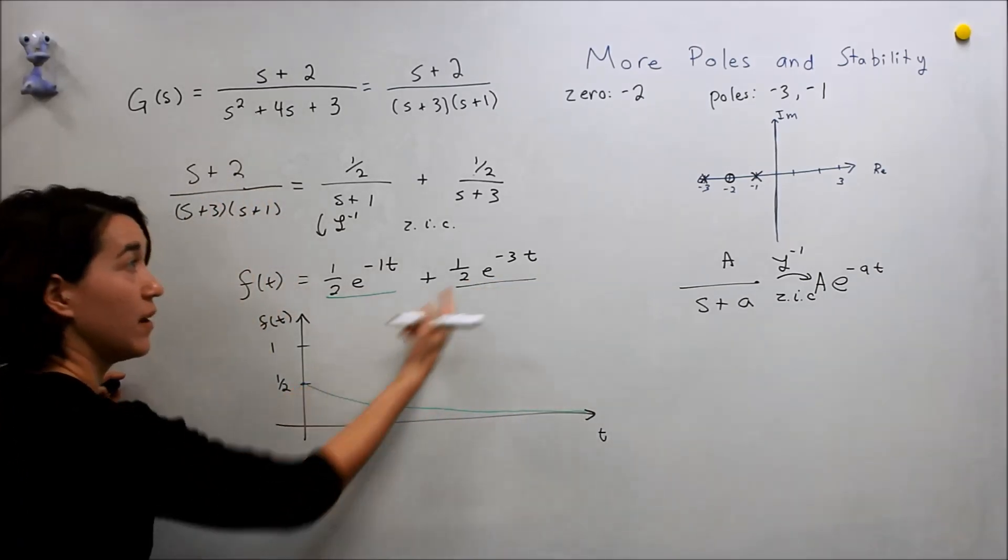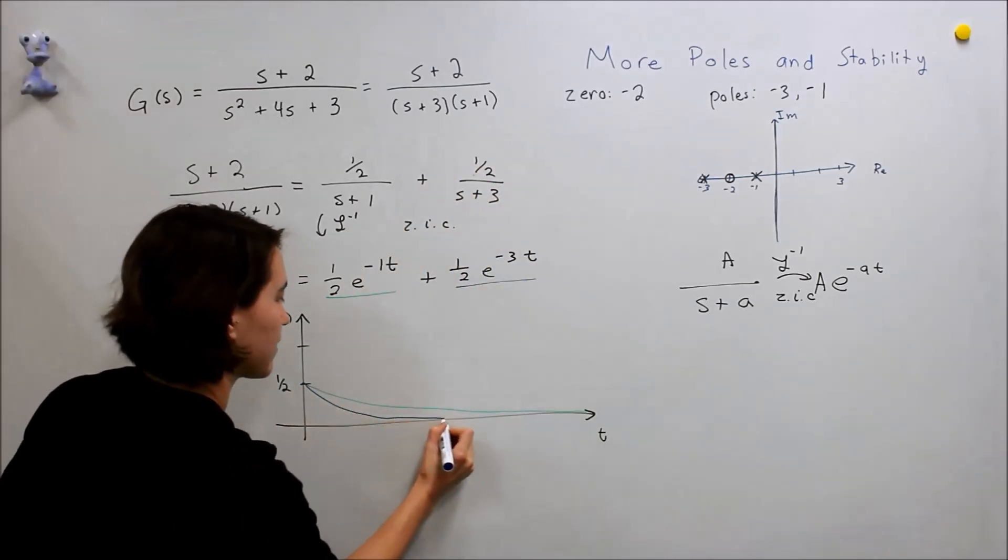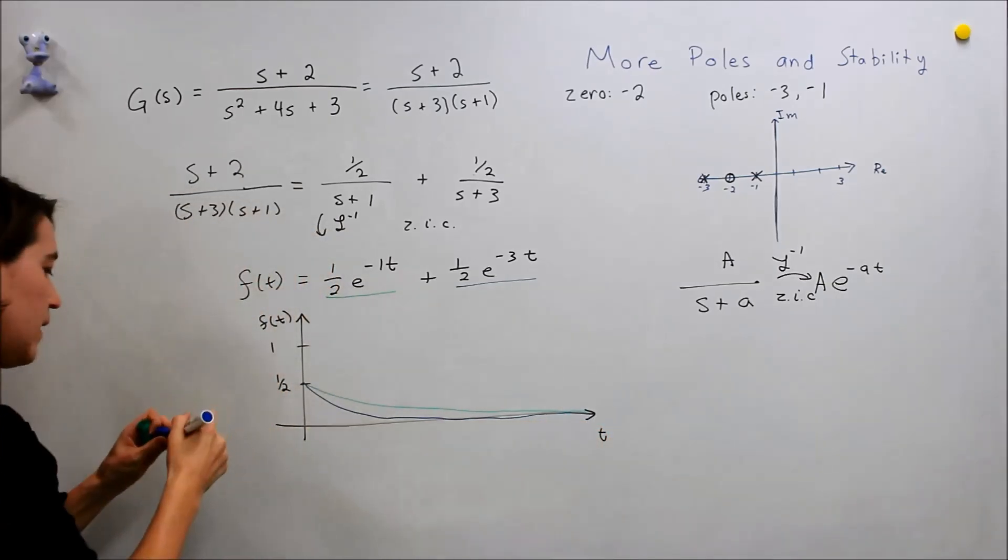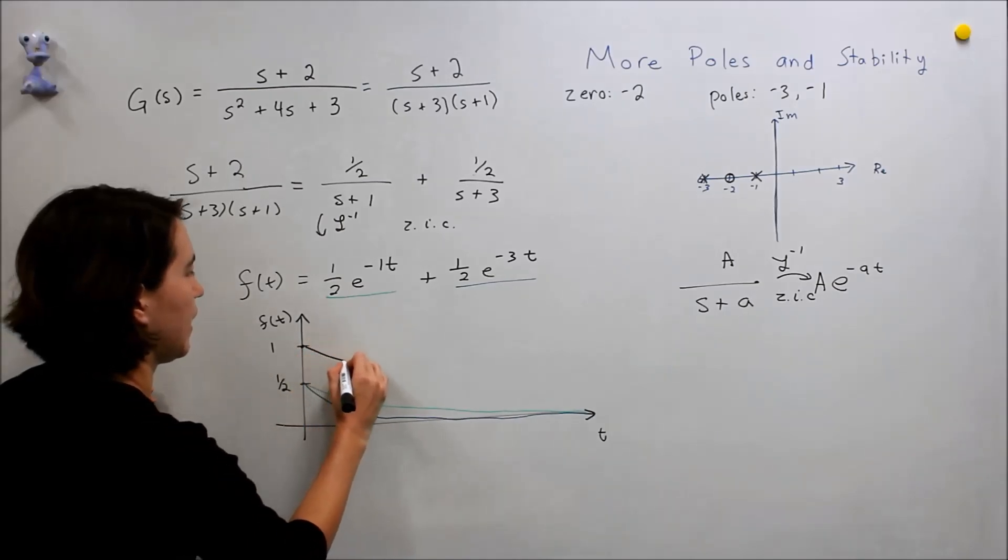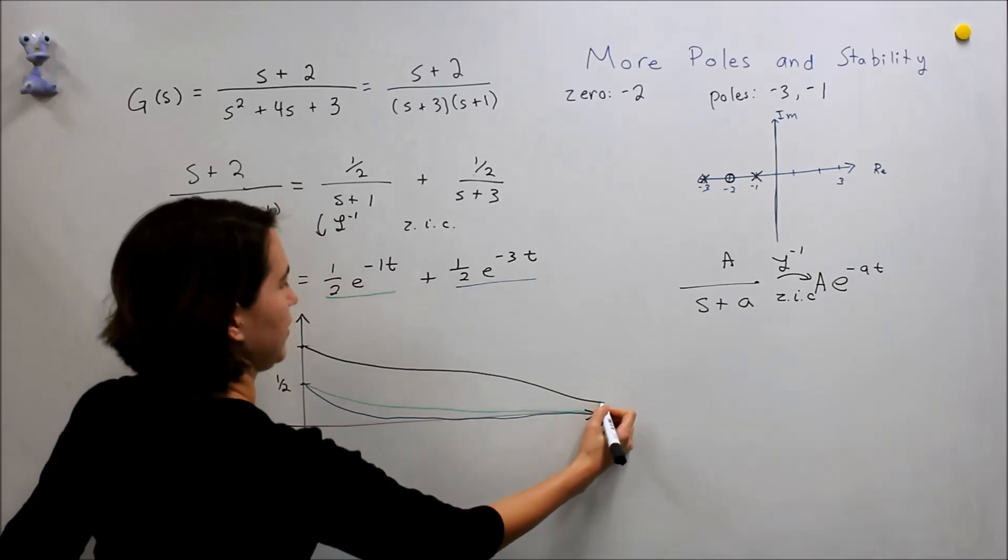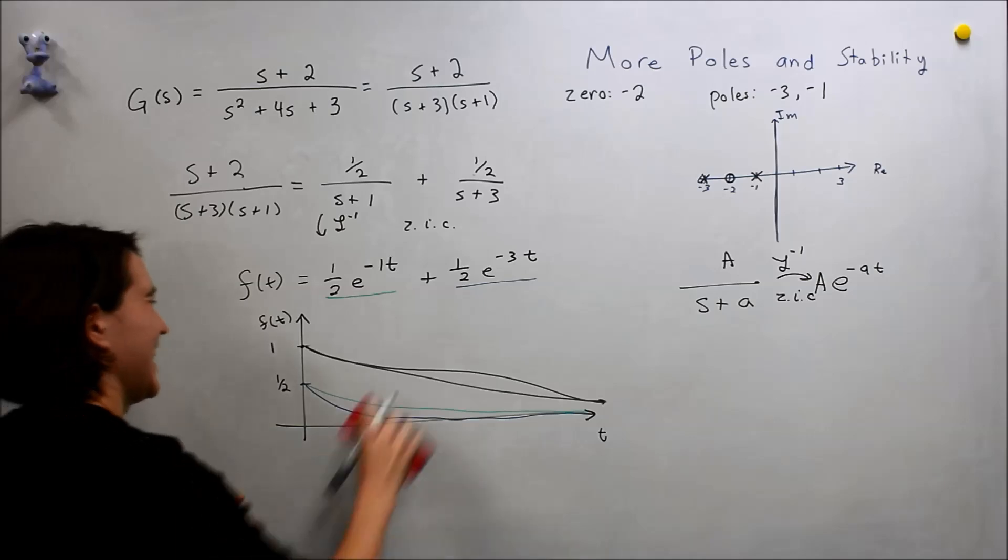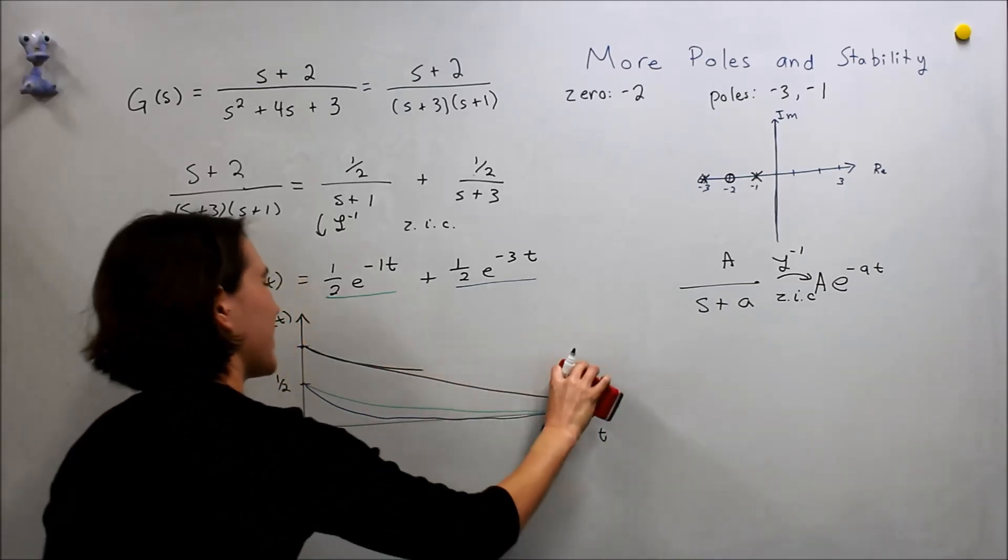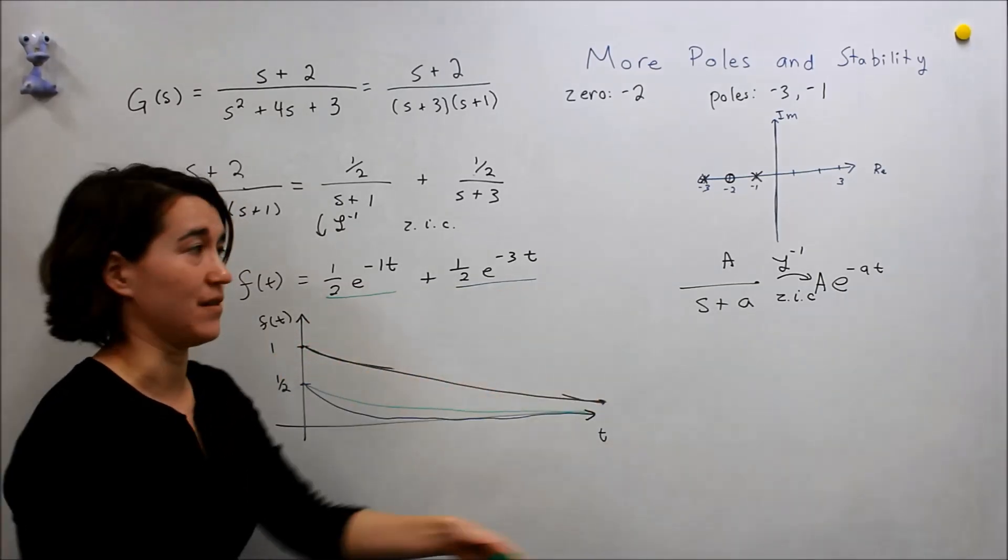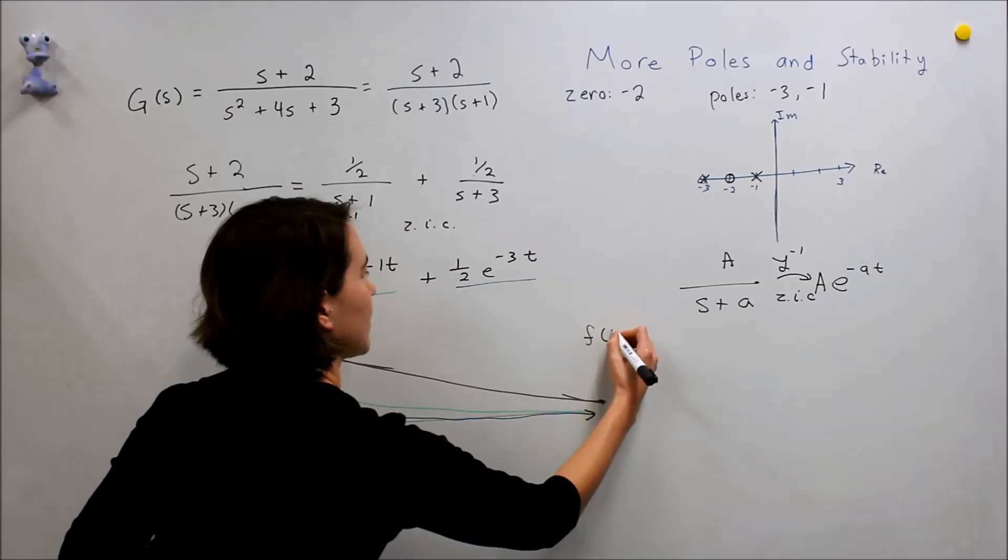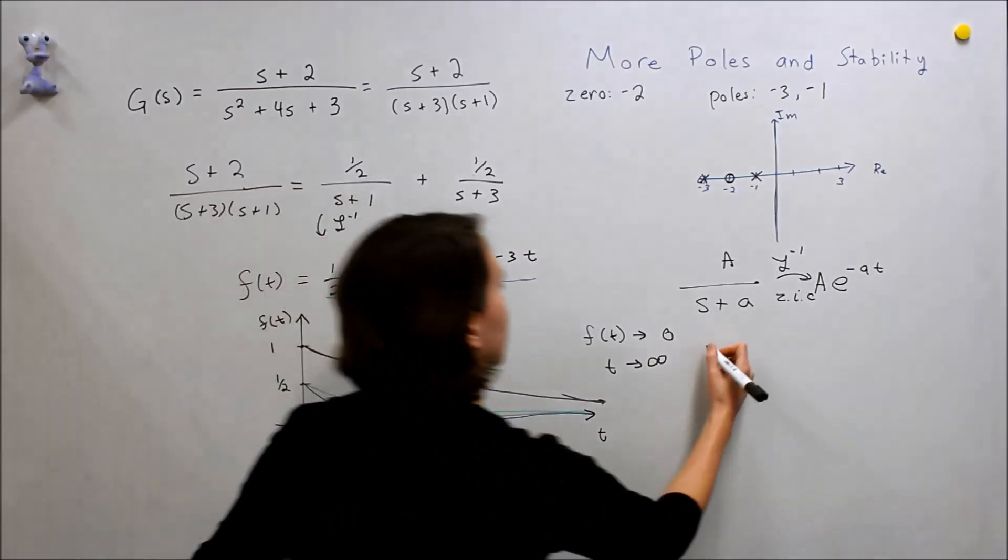If we just plot this, it would also start at 1 half, but it's decaying more rapidly, so it would decay faster than the other one towards zero. The sum would simply be adding them together, so starting at 1 and decaying at some rate down here. You can see that this expression, the sum of these two exponentials, also decays to zero. Since this expression, after t, the system goes to zero as t goes to infinity, we know that the system is stable.